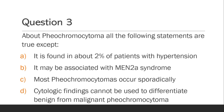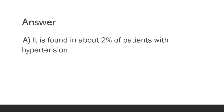Question 3. About pheochromocytoma, all the following statements are true except: Option A, It is found in about 2% of the patients with hypertension; Option B, It may be associated with MEN2A syndrome; Option C, Most pheochromocytomas occur sporadically; Option D, Cytologic findings cannot be used to differentiate benign from malignant pheochromocytoma. The answer is Option A — it is found in about 2% of patients with hypertension.